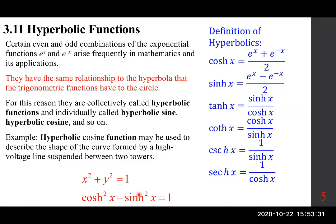Let's discuss cosh x. Cosh x, by definition, is e to the power of x plus e to the power of minus x, over two. This is the definition of hyperbolic cosine, also called cosh x. Sinh x is the same thing but with a minus in between — these two are definitions.